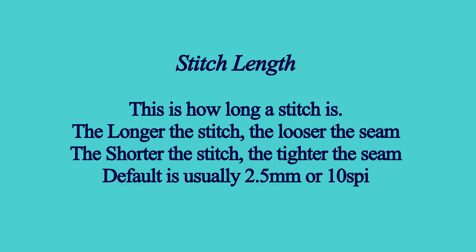Stitch length — this is how long a stitch is. The longer the stitch, the looser the seam. The shorter the stitch, the tighter the seam. The default is usually 2.5mm or 10 stitches per inch.